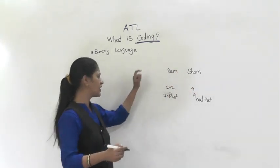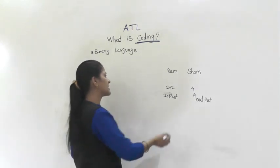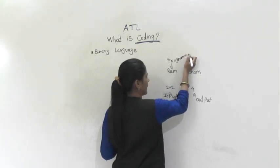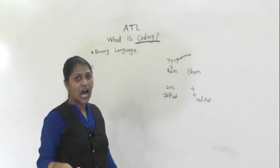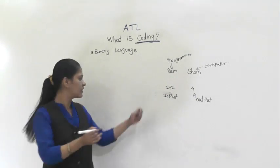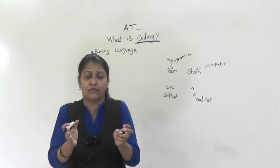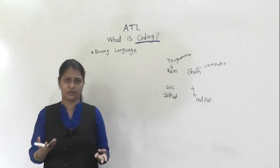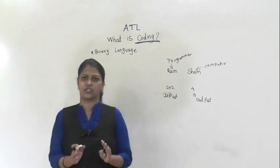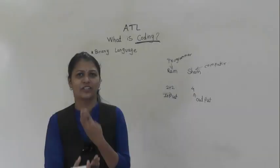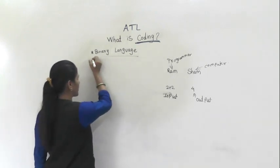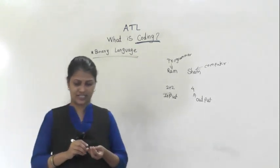In computer language, Ram — the one asking the question — is the programmer, and Sham — the one giving the answer — represents the computer. But unlike Ram and Sham, who share the same language, if we sit in front of a computer and ask questions, we cannot get answers directly. The computer uses binary language.